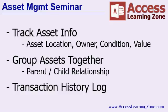We'll start off by tracking all the basic stuff that pretty much every asset management database can track: the asset's location, its owner, its condition, its value, the value when you purchased it, the value when you sold it, the date you retired it — all that kind of standard information.